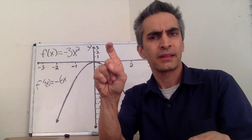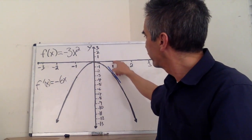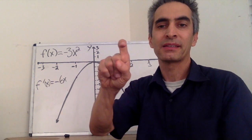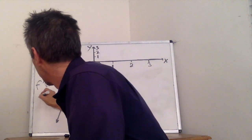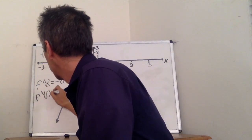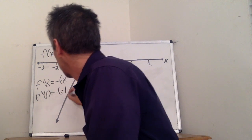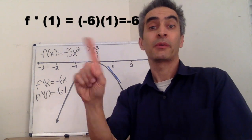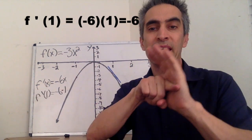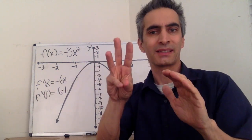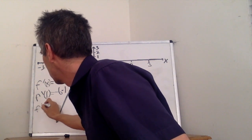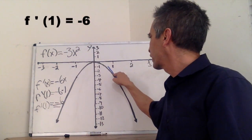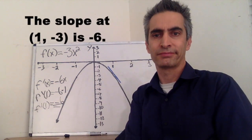How do we calculate the slope when x equals 1? f prime at 1 equals negative 6 times 1, which equals negative 6. That means that the slope at that point equals negative 6.